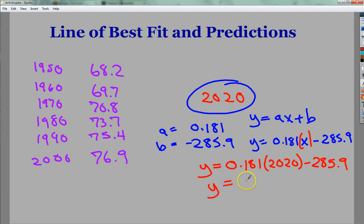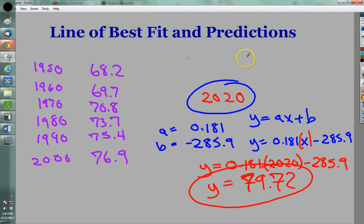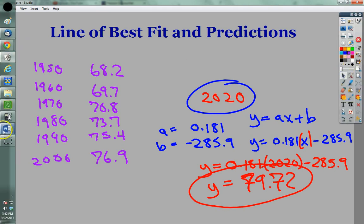So my Y value that pops out is 79.72, which makes a lot of sense because it seems to be that as people, the later they are born, the longer their lifespan tends to be. But that's how you get it. You plug in the value for X once you find your line of best fit, and you get your answer. Pretty simple stuff. Not overly mind-breaking.